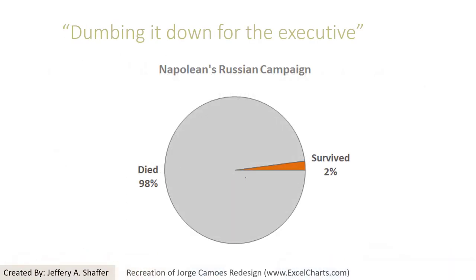Someone might prefer a simple pie chart — the story simply being that only 2% of people survived. So they all died, and the campaign was lost.